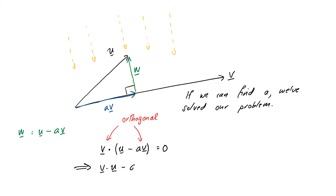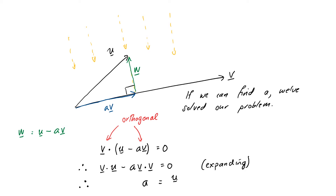Therefore, v dot u minus av dot v equals zero, just by expanding our parentheses. That right-arrow symbol, which you read as 'implies', is used to link a mathematical statement that follows from another one — you could also use 'therefore', these three dots. Remember that dot products just give numbers, so we can rearrange this to solve for a. So a is therefore equal to u dot v divided by v dot v. That wasn't really as hard as we thought — we've got our scalar a, so we can build this shadow.